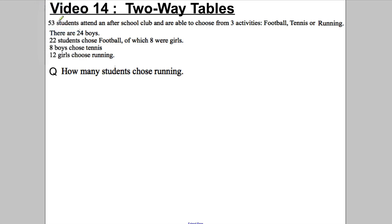Here's our key information: 53 students attended an after-school club and are able to choose from football, tennis, or running as their activities. There are 24 boys. 22 students chose football of which 8 were girls. 8 boys chose tennis and 12 girls chose running. The question is how many students in total chose running.